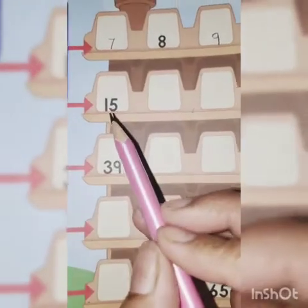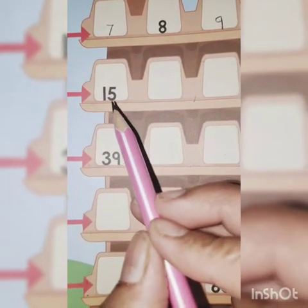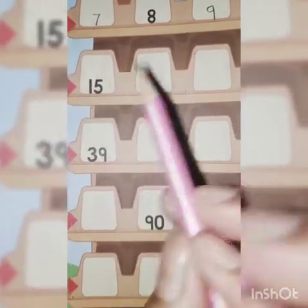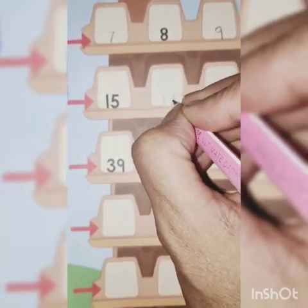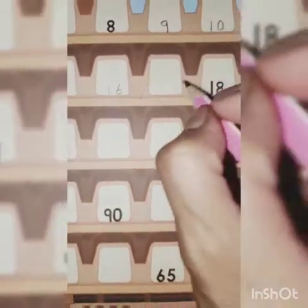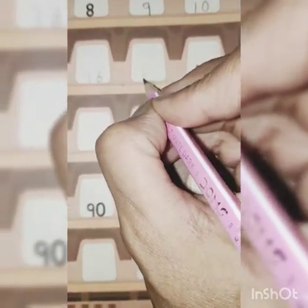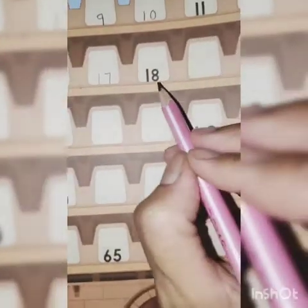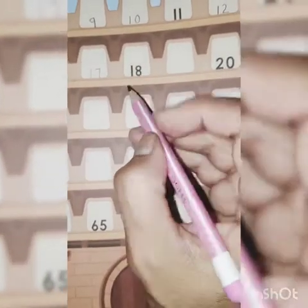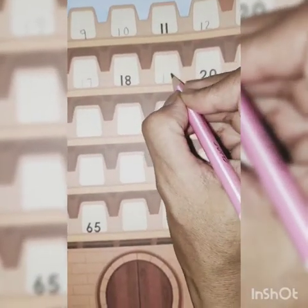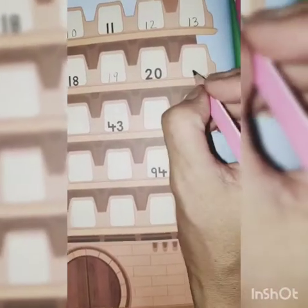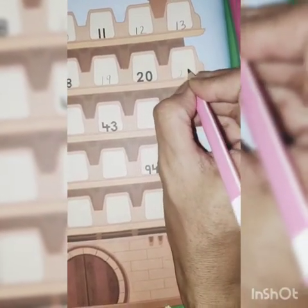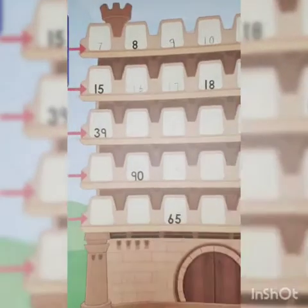Next row. 15. So, what comes after 15? 16 — write down 16. Then 17, 18 — already written. Then 19. Very good. 20. And what comes after 20? 21. Done. Second row complete.